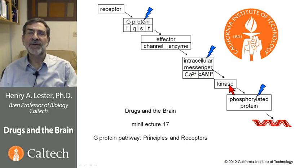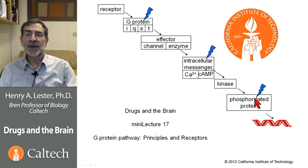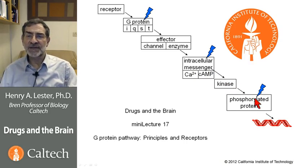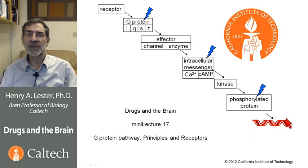This often activates a kinase, another type of enzyme. The kinase phosphorylates a protein, and if the pathway goes on long enough, the phosphorylated protein goes into the nucleus and activates genes.